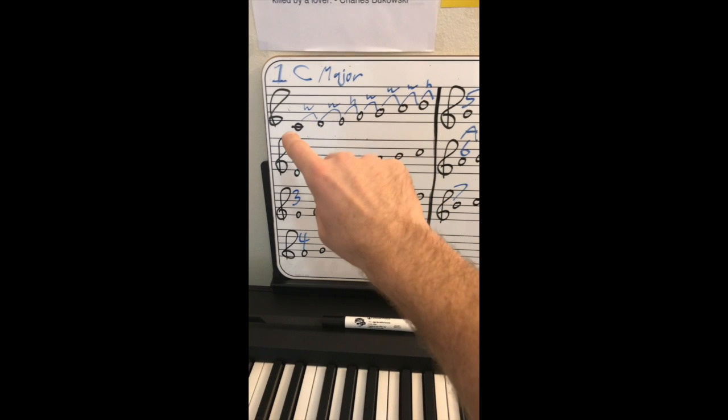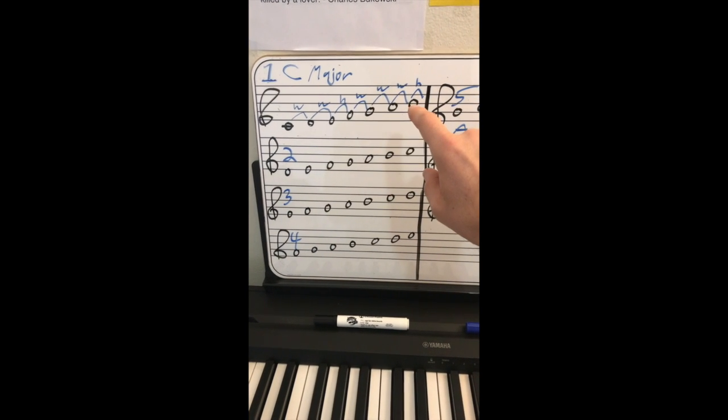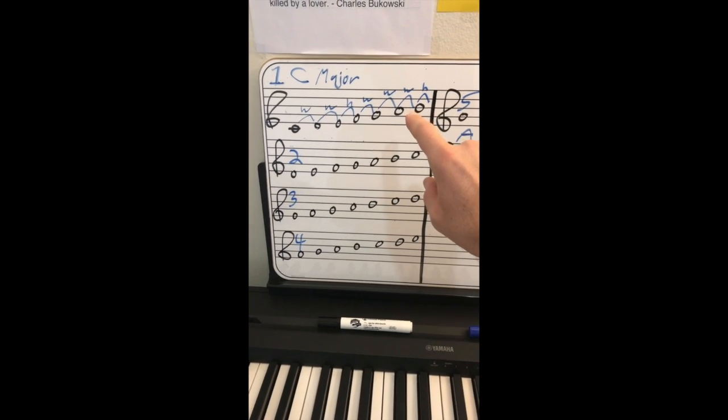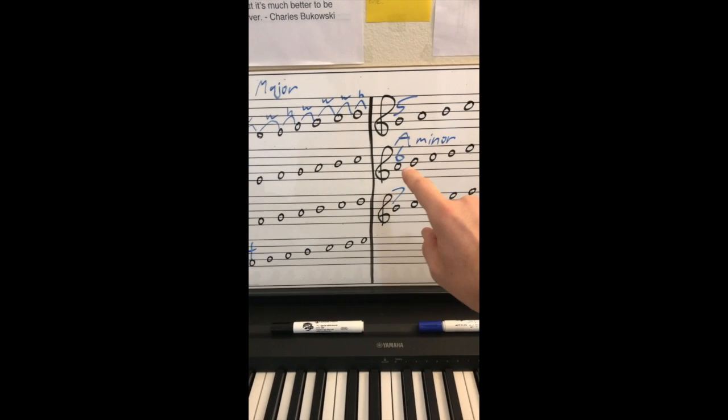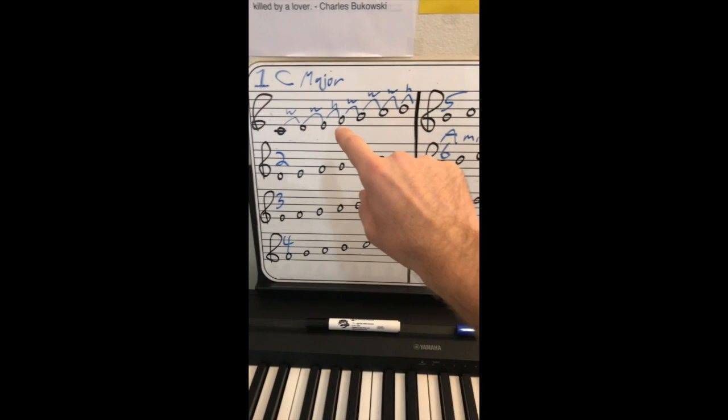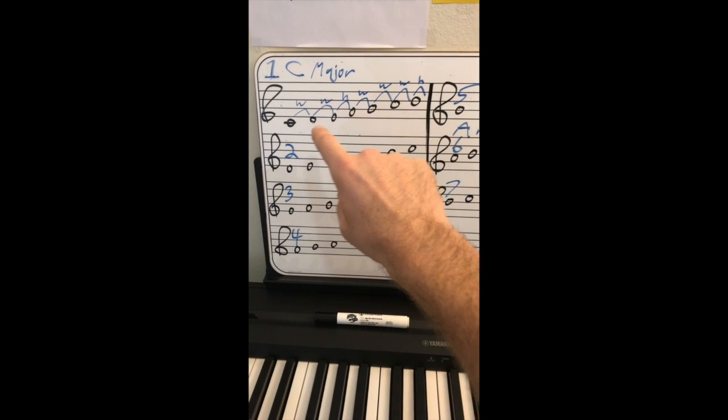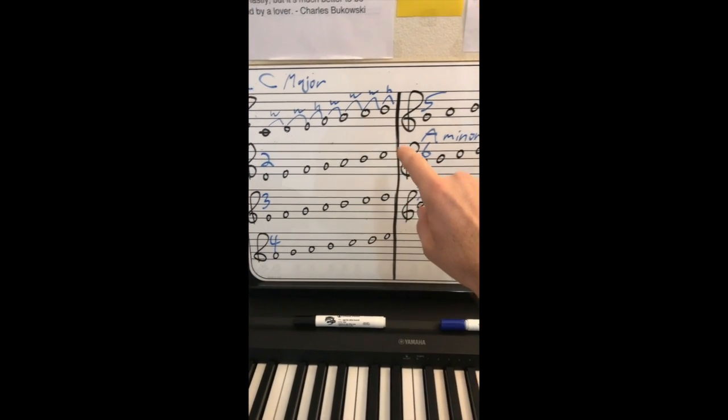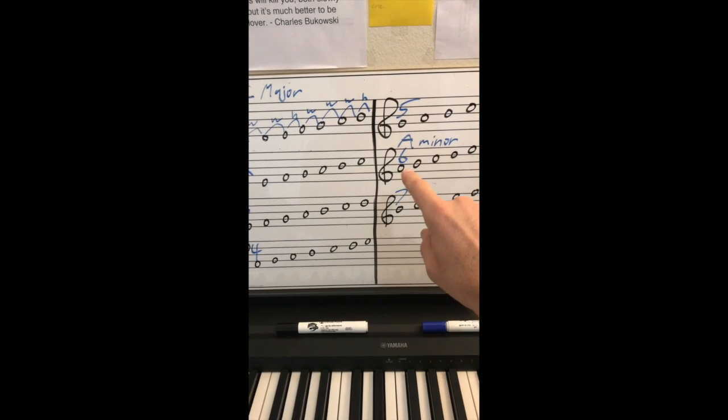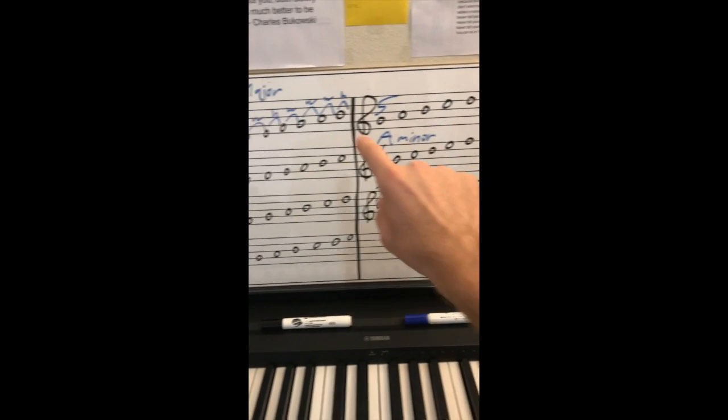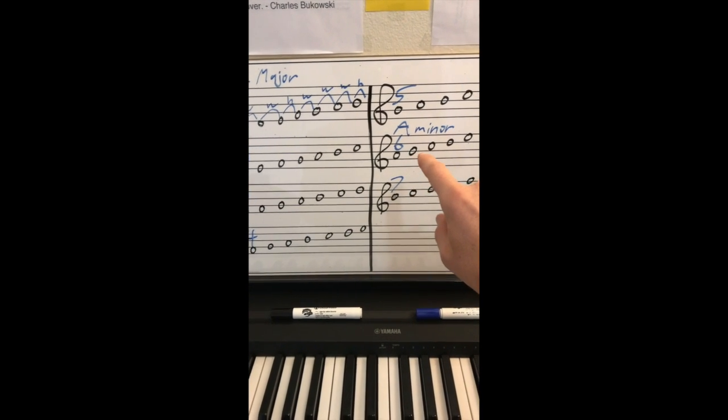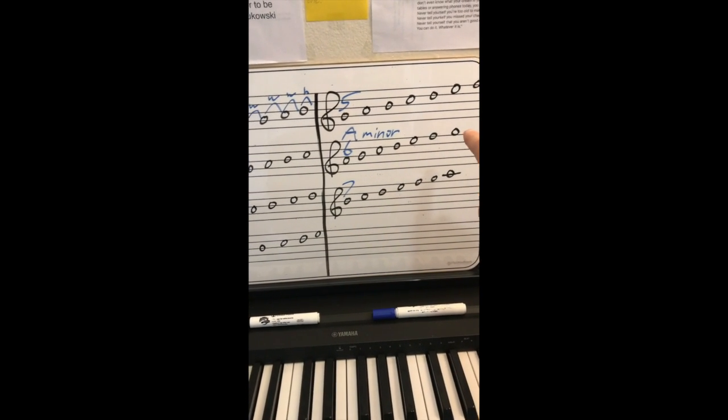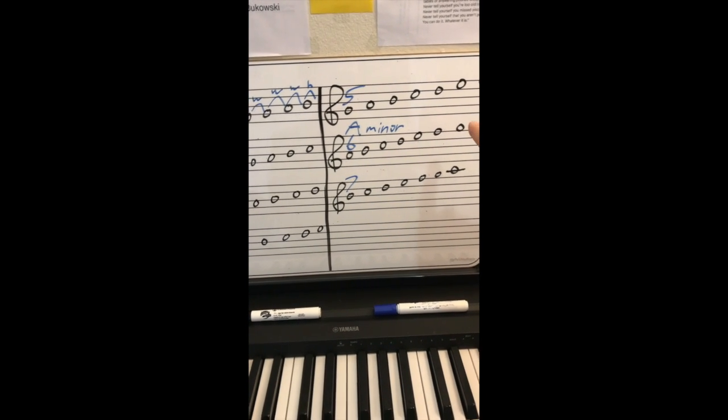Now, then we learned that every major scale has what's called a relative minor, where you start on the sixth degree of that scale, use the same notes, and you get the relative minor. The sixth degree of C, 1, 2, 3, 4, 5, 6, is A. A minor is the relative minor to C major. Same notes, starting on A: A, B, C, D, E, F, G, another A there at the octave if I had put that in.